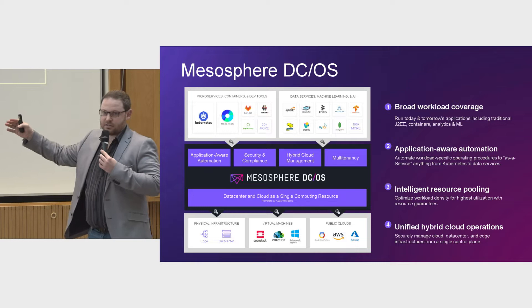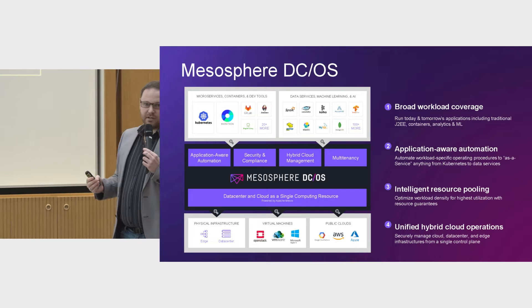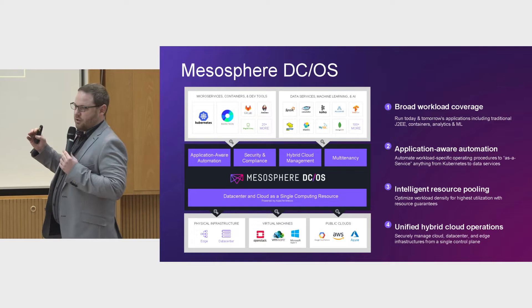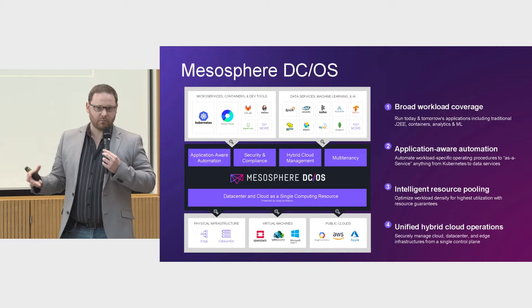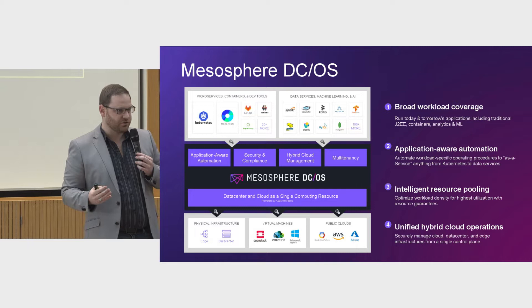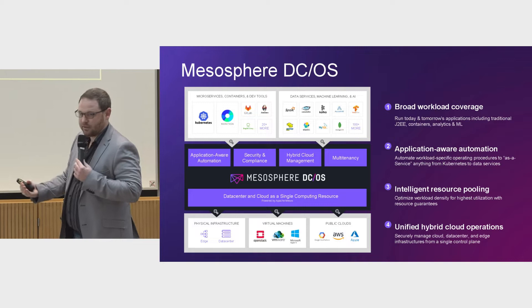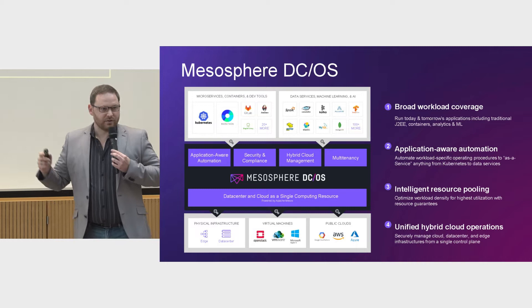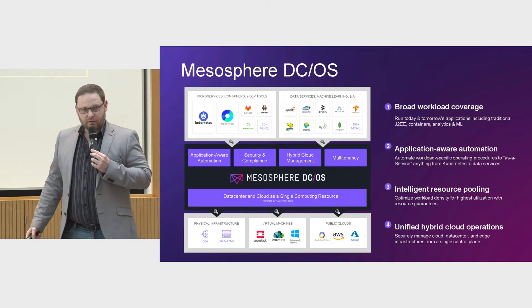We also provide intelligent resource pooling. Underneath Mesosphere DCOS is Apache Mesos — where the name Mesosphere comes from. Apache Mesos does one thing better than anything else: pooling and serving up infrastructure resources into one common pool. Mesos itself provides the infrastructure as a single pool, making offers to the application tier so that the application tier can be intelligent with what it consumes.